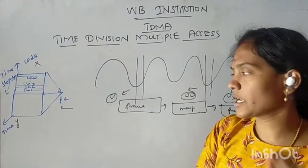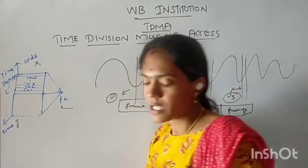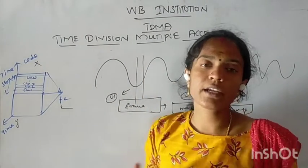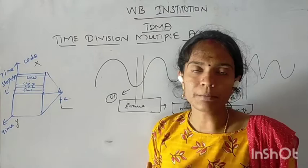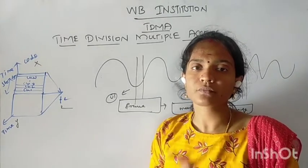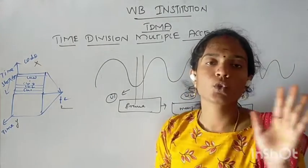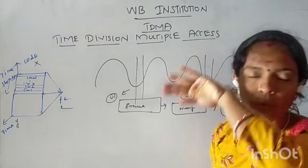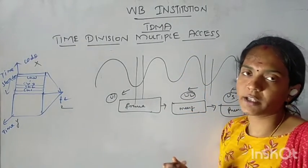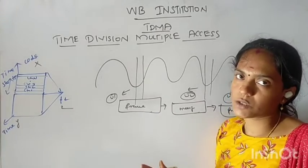TDMA divides the entire radio spectrum. Each user is allocated to each time slot. Over time, each user is allocated a slot. That is the TDMA process.